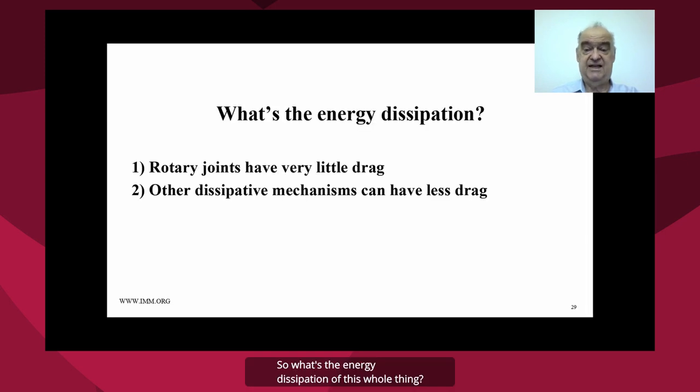So what's the energy dissipation of this whole thing? Well, the rotary joints have very little drag. And if you think about it long enough, you'll realize that the other dissipative mechanisms, if you design the mechanism appropriately, can have even less drag than the rotary joints. So essentially, the way that you operate is to count up the drag in the rotary joints and then ignore the drag from the other mechanisms because they have less drag than the rotary joints.